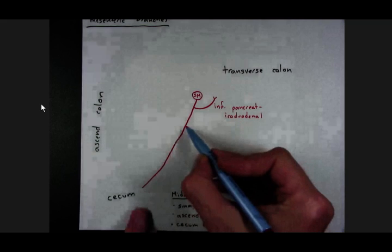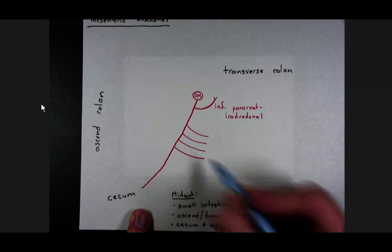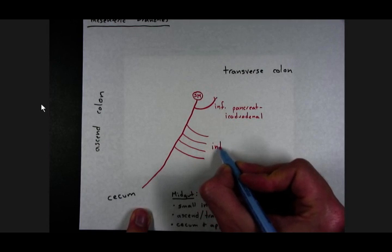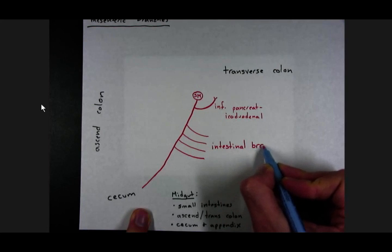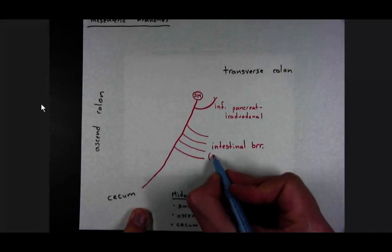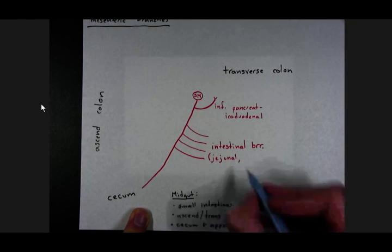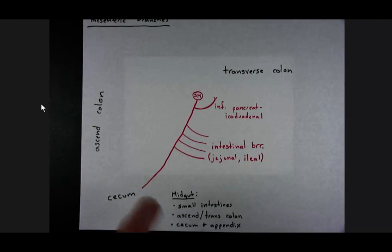There will be several branches coming off of the superior mesenteric artery that we just refer to as intestinal branches. And by that I mean small intestine. So jejunal and ileal. We don't need to count them or number them or anything crazy like that. They are just branches off of the superior mesenteric artery.